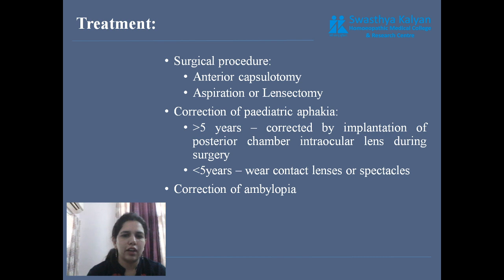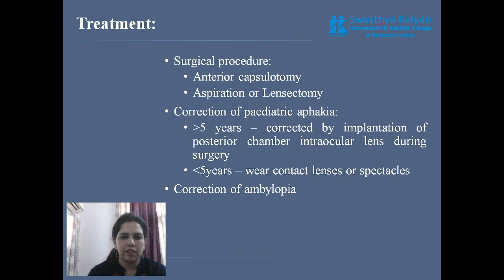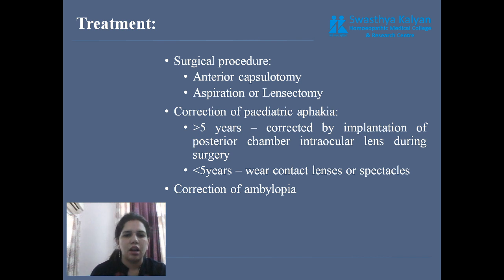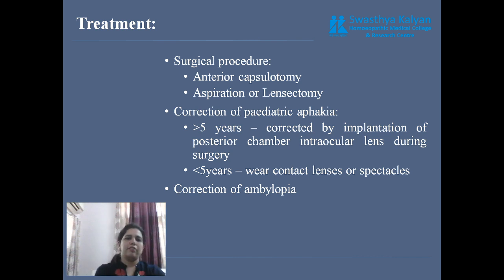For correction of pediatric aphakia: if the child is more than 5 years, it is corrected by implantation of a posterior chamber intraocular lens. If the child is less than 5 years, spectacles should be worn, and later when the child grows up to 5 years, corrective surgery is done. Correction of amblyopia is also performed.